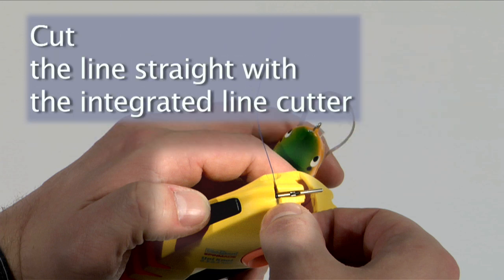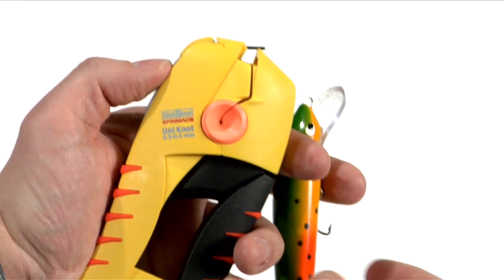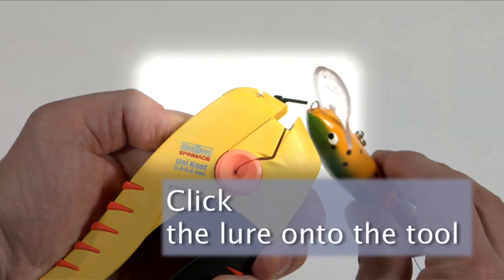Next, use the integrated line cutter and cut a straight line. Then click the fishing lure onto the end of the tool.